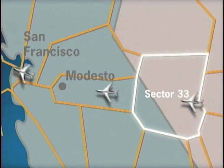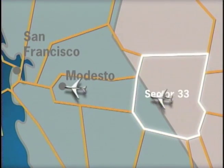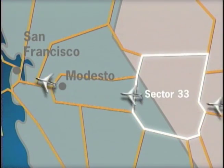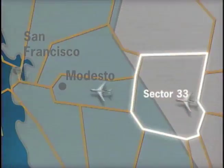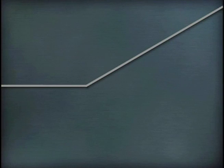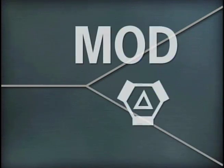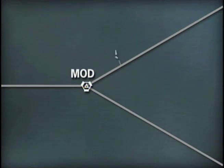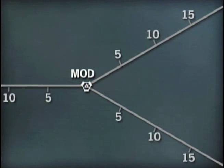Let's look at air traffic control sector 33 in Nevada and Northern California. In sector 33, planes fly through Modesto on their way to San Francisco. A sector is made up of many flight routes — invisible pathways in the sky. These routes intersect at Modesto. The distance along each route is marked every five nautical miles starting at Modesto, with a tick mark every one nautical mile.